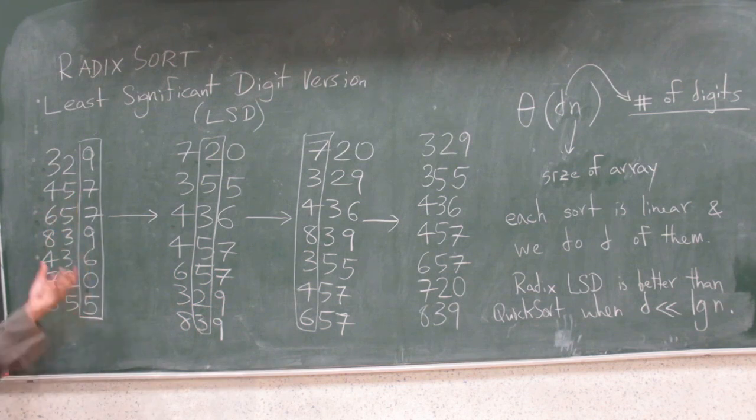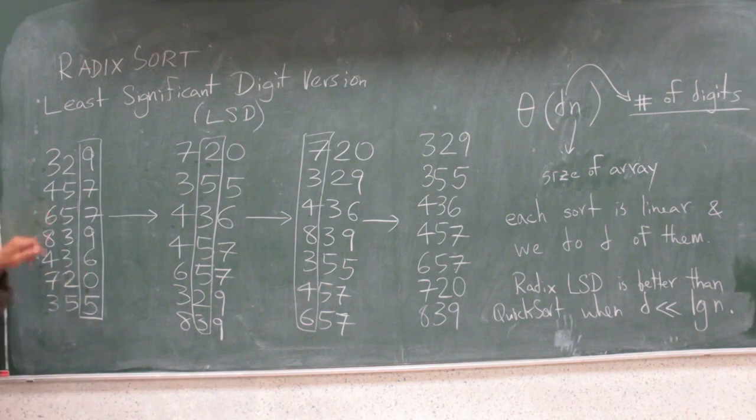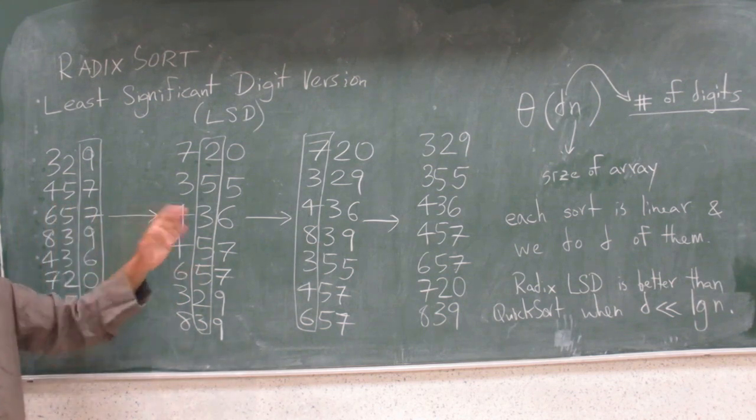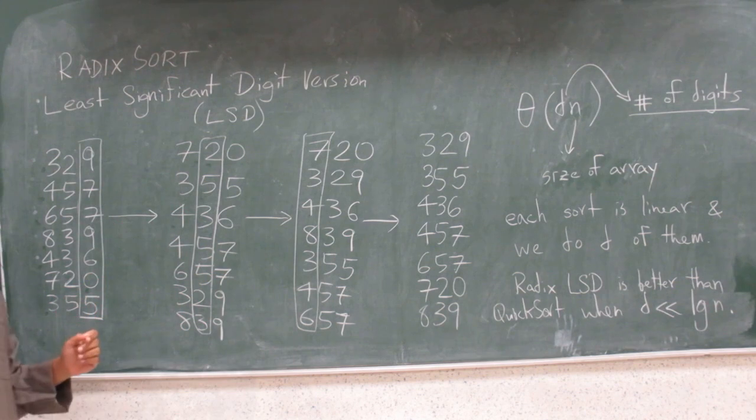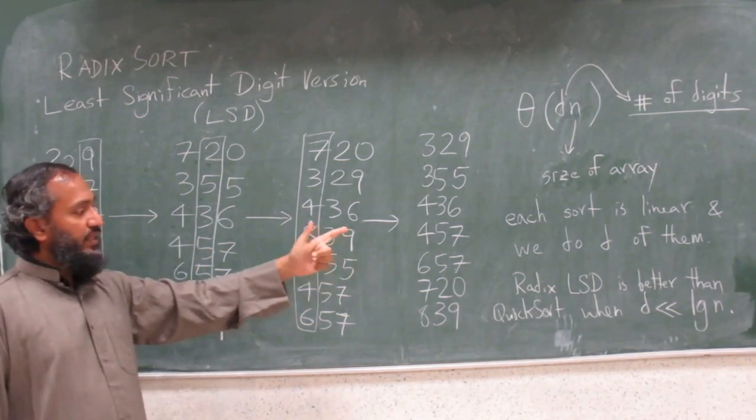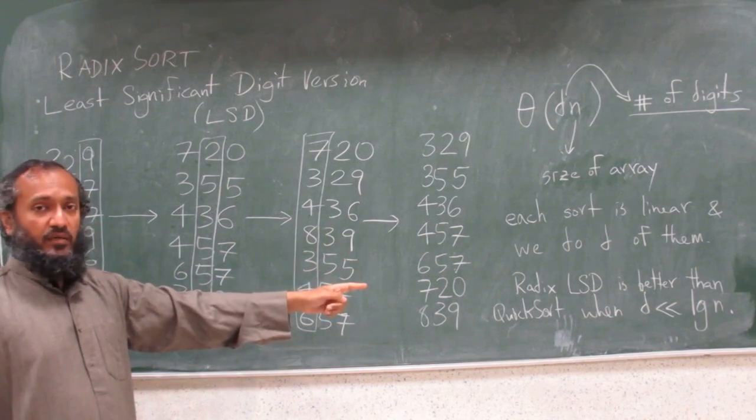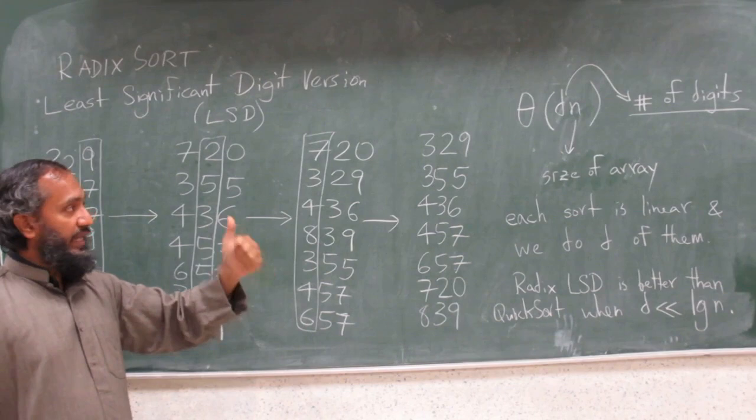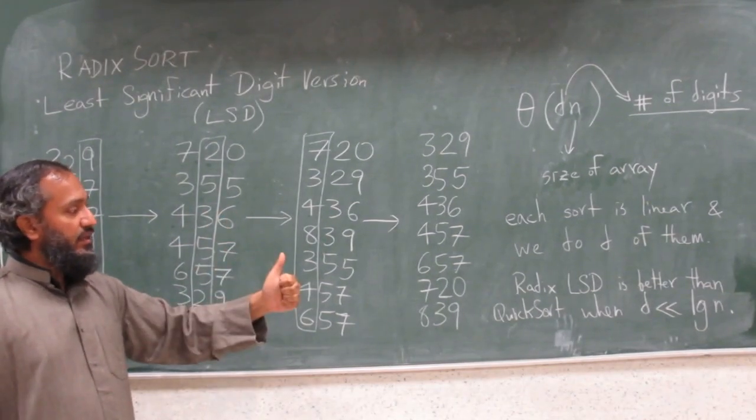But let's say there are billion numbers and they're all three digits long, three or less. There's going to be a zero at the beginning if it's a two digit number. Then it's going to be, the performance will be something like 3N, or 3CN, where CN is the cost of each iteration. So this sorting algorithm beats quicksort. It actually has linear time performance if D is a constant that doesn't grow with N, and that D constant is less than log N.